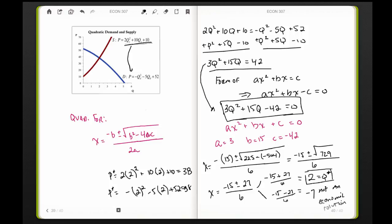So there we go. We've just used the quadratic formula to solve for a market equilibrium. Equilibrium here is going to occur at P* = 38 and Q* = 2.